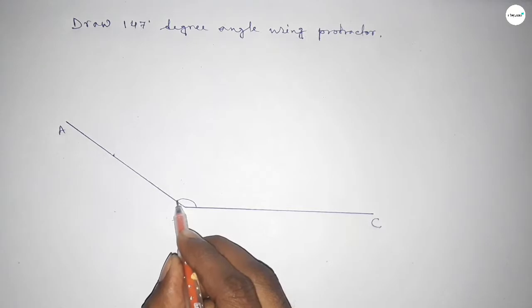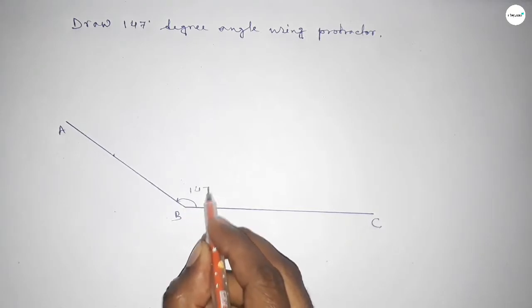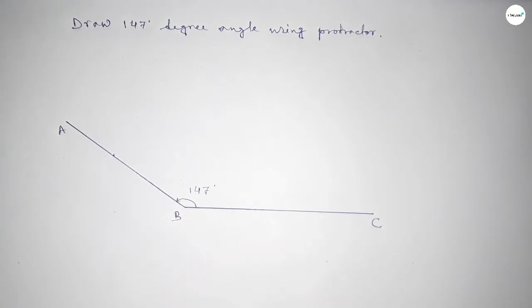So angle ABC up to this is 147 degrees. Therefore angle ABC equals 147-degree angle. That's all.